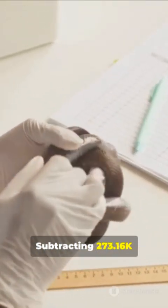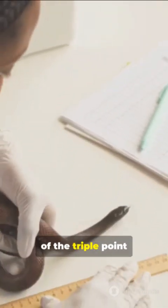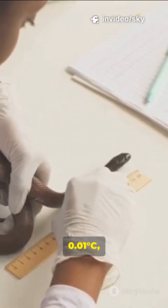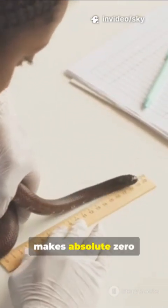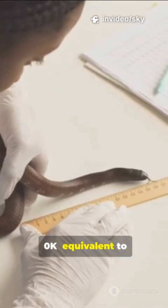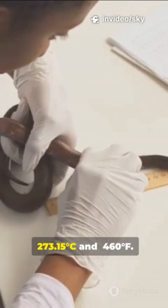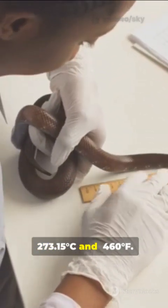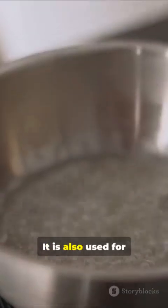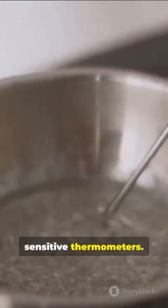Subtracting 273.16 K from the temperature of the triple point of water, 0.01 degrees Celsius, makes absolute zero, zero K, equivalent to minus 273.15 degrees Celsius and minus 460 degrees Fahrenheit. It is also used for calibrating sensitive thermometers.